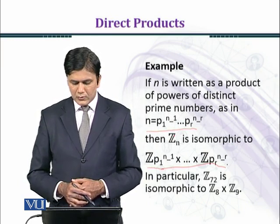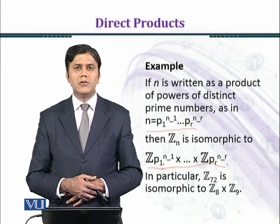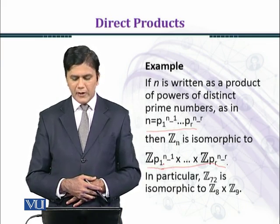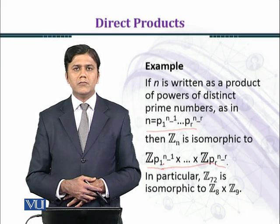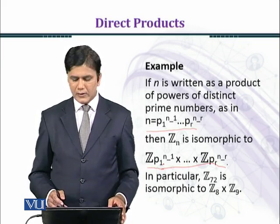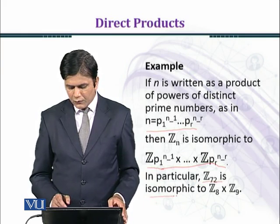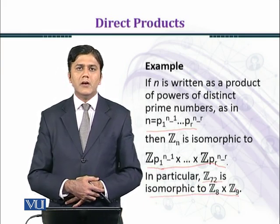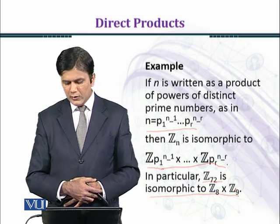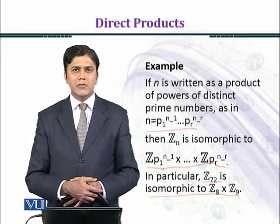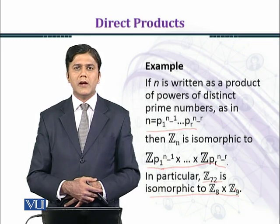The direct product of the groups Z_(p_i^n_i) for i = 1 to r gives Z_(p1^n1) × ... × Z_(pr^nr). In particular, Z_72 is isomorphic to Z_8 × Z_9, since 72 = 2^3 × 3^2, so we can write Z_(2^3) × Z_(3^2).